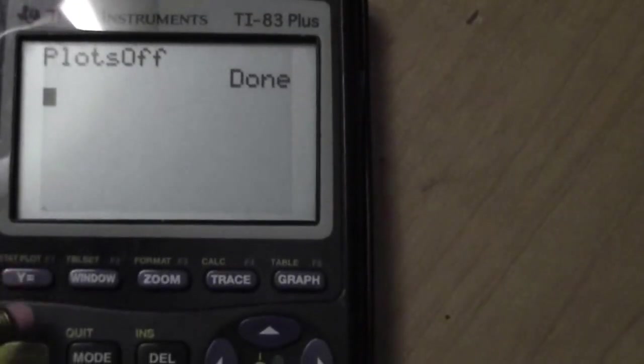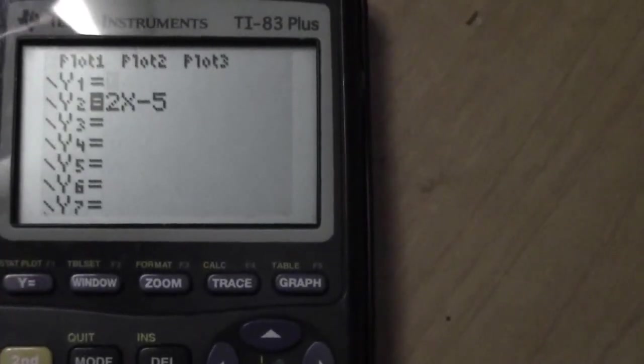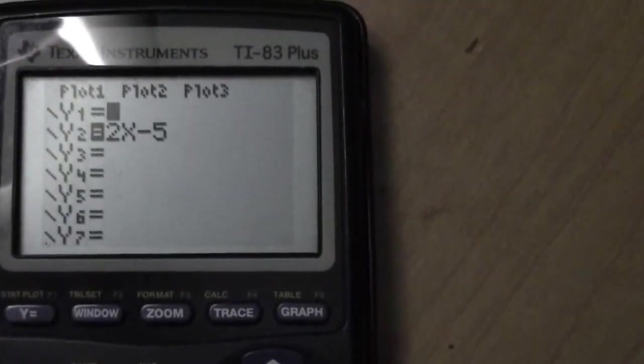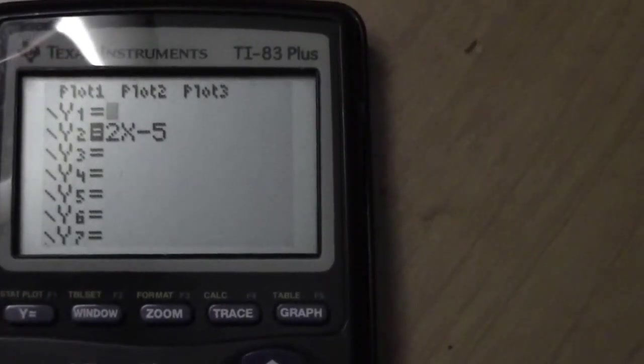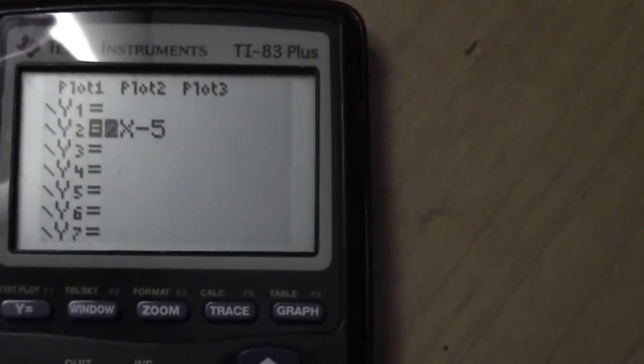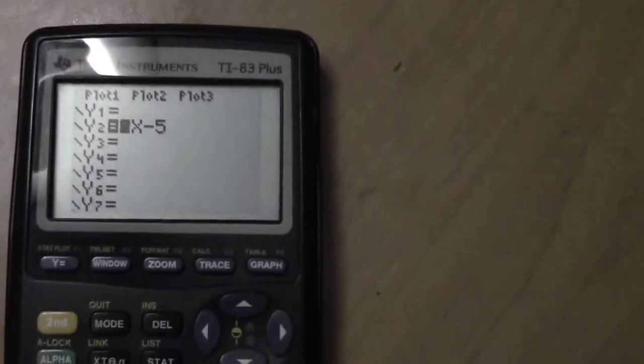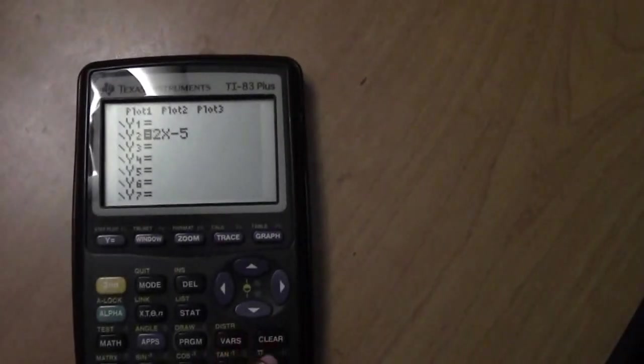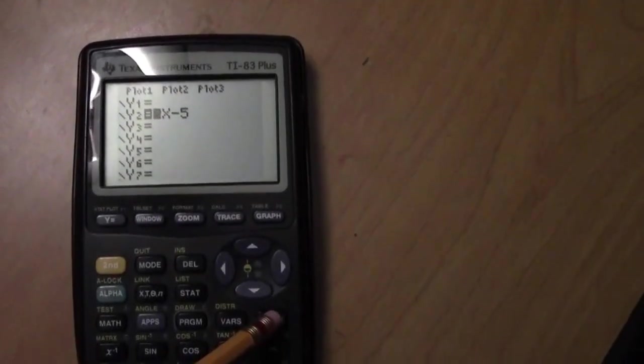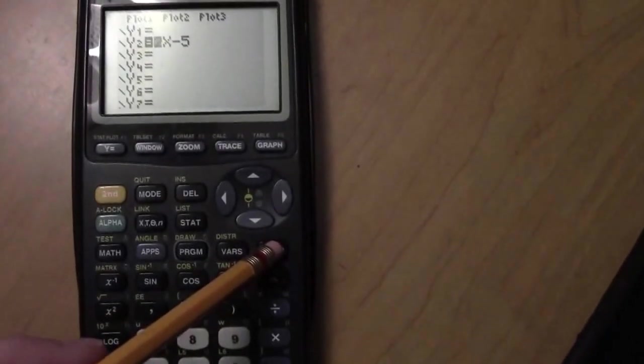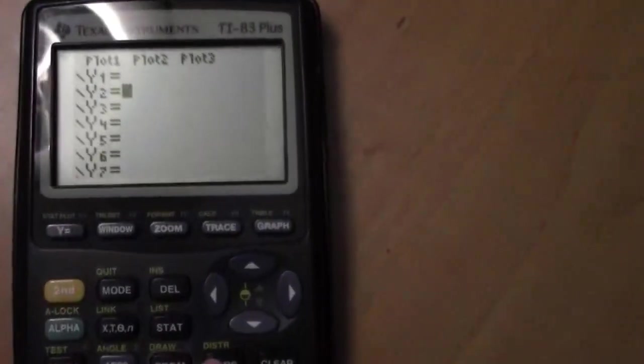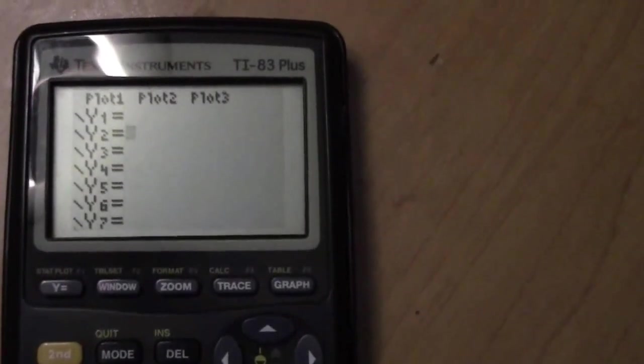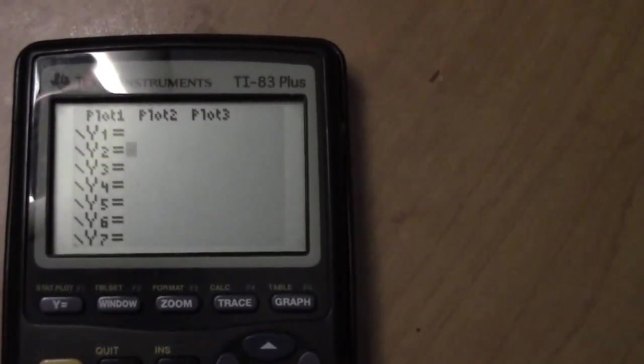Also, you need to go into your y equals button and make sure that there are no leftover equations. You can use your arrow key, and then you can push the clear button. Notice the clear button is right here. Push clear, and your screen is cleared, and you should have nothing in your y equals section.